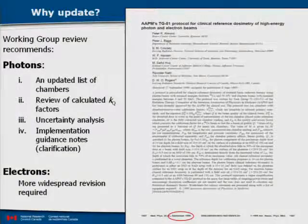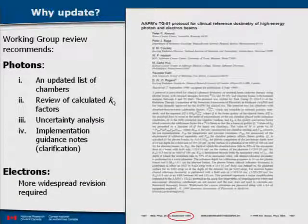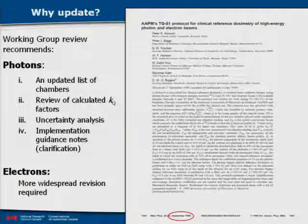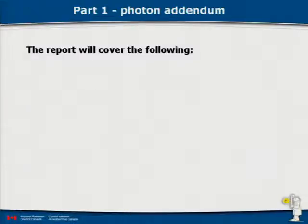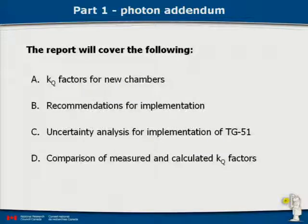For electrons, a more widespread revision is required. Dave alluded to that with one plot where the P wall is very different from the assumption of unity in TG51. At the end of this talk, I'll briefly discuss electron progress and where we need to go. The photon addendum is coming and will cover: KQ factors for new chambers calculated with Monte Carlo, recommendations for implementation, uncertainty analysis, and a comparison of measured and calculated KQ factors.